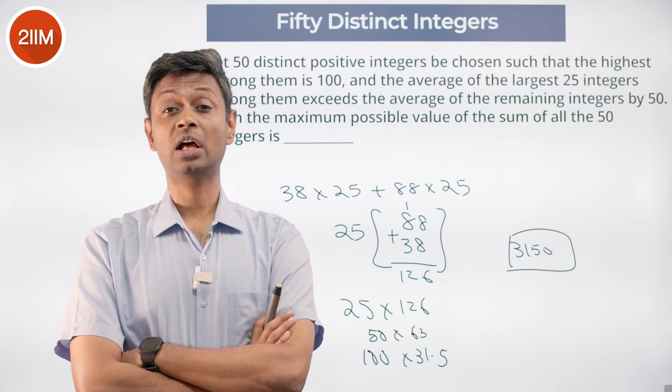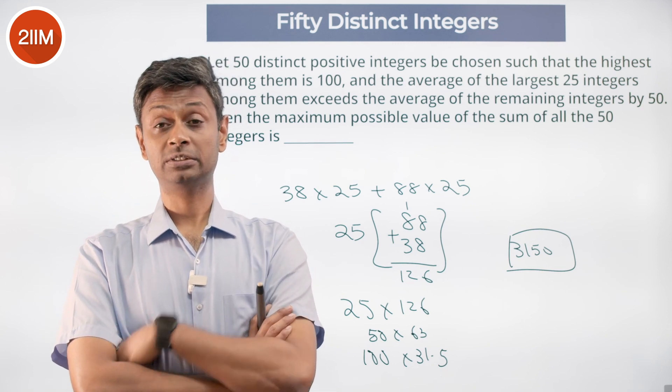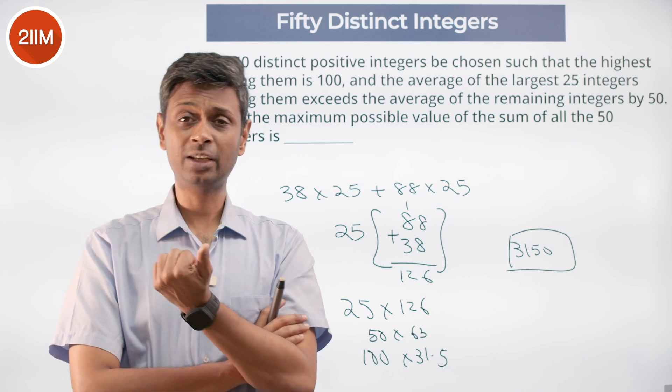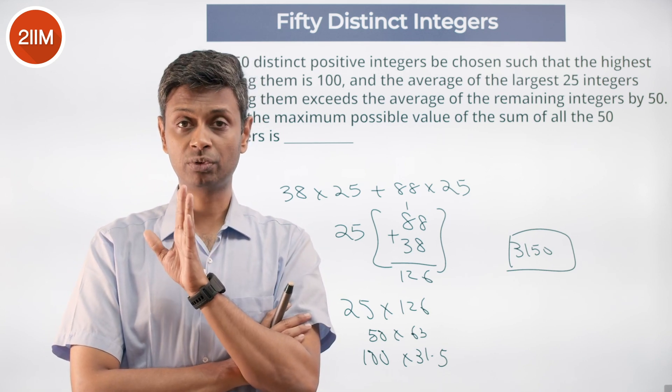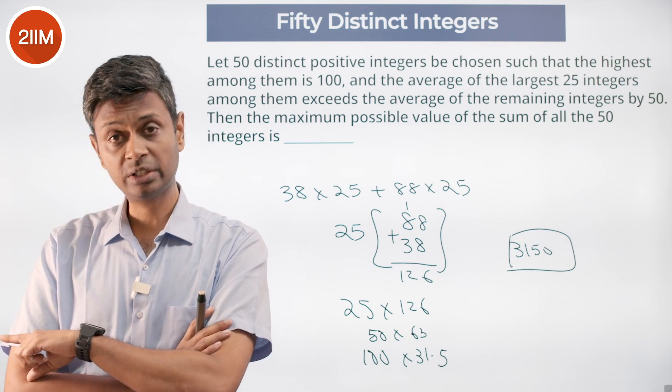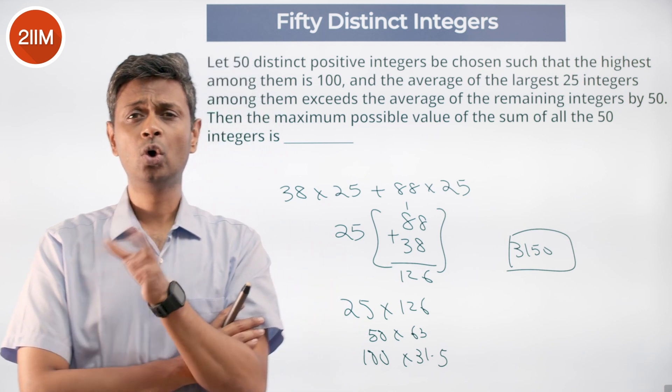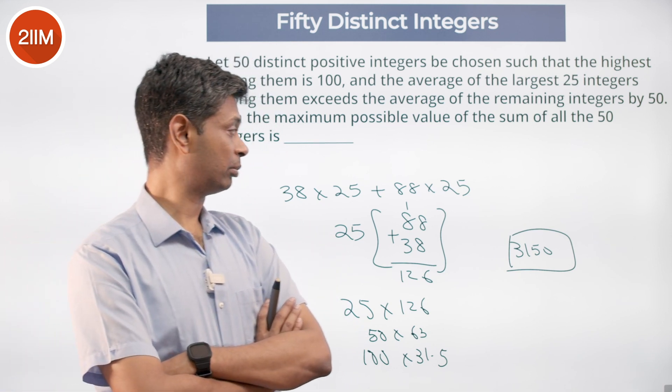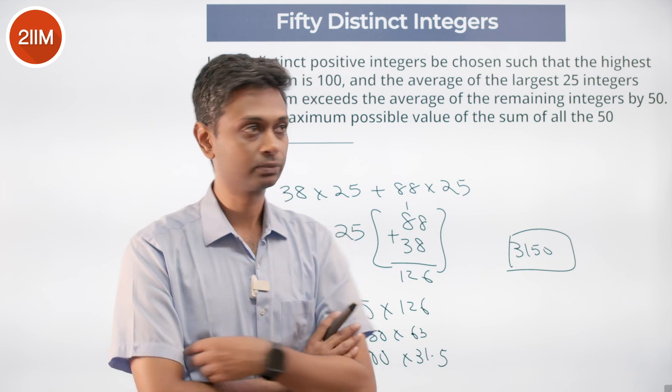Get that. Maximize the largest 25 integers. That will automatically maximize that average, automatically maximize that set. That is maximize the second one is automatically maximized because the difference between the averages is 50. The 25 largest integers have an average of 88, smallest integers have the average of 38. It's the best case scenario. Overall total is 25 times 38 plus 88, 88 plus 38.